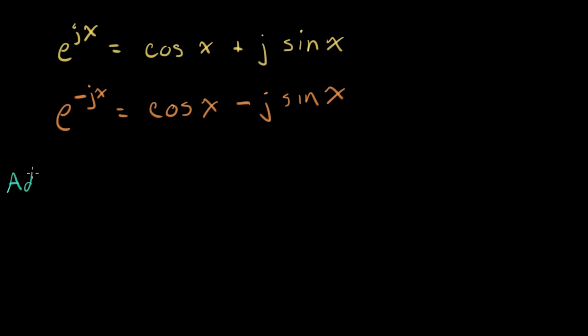So, if I add, I'll get e to the jx plus e to the minus jx equals, cosine doubles two cosine x and the two sine terms cancel out, right? So, then I can write, I'll write it over here. I can write cosine of x equals e to the plus jx plus e to the minus jx over two. All right, so that's the expression, that's the expression for cosine in terms of complex exponentials.